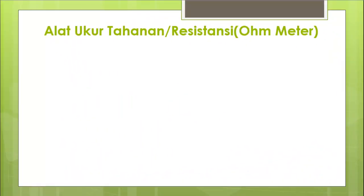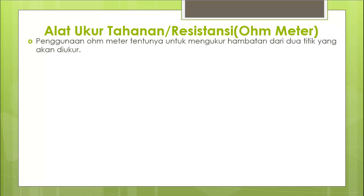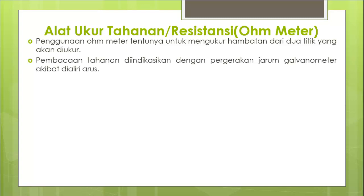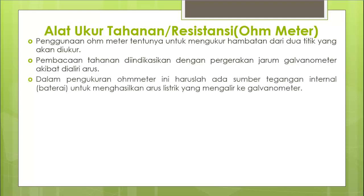Alat ukur untuk resistansi adalah ohmmeter. Penggunaan ohmmeter adalah untuk mengukur hambatan di dua titik yang akan diukur. Walaupun nilai resistor bisa dibaca dari kode gelang, ada beberapa komponen yang perlu diukur resistansinya secara langsung. Pembacaan tahanan diindikasikan dengan pergerakan jarum galvanometer. Di dalam ohmmeter harus ada sumber tegangan internal, karena yang diukur adalah resistansi, sedangkan prinsip PMMC memerlukan arus yang mengalir.